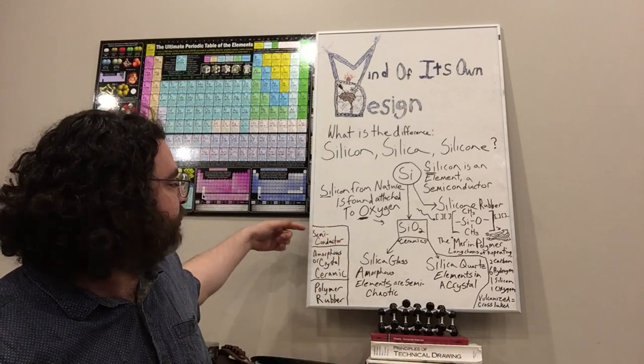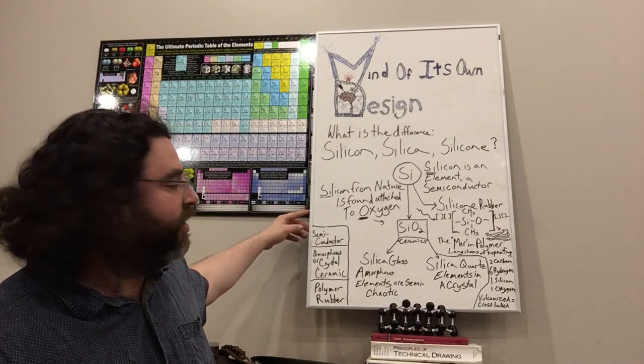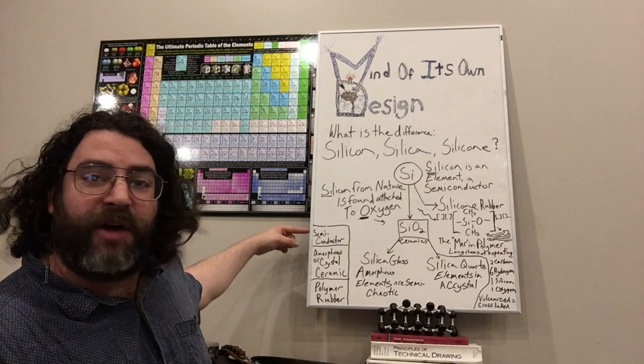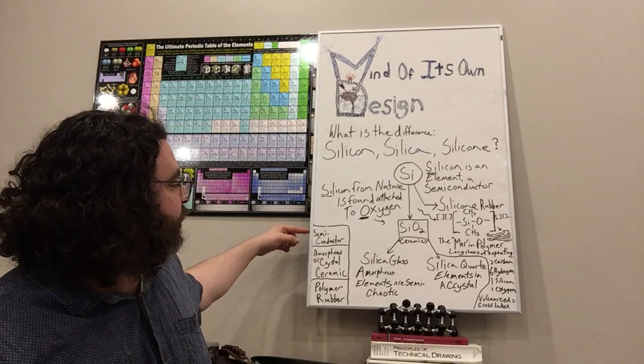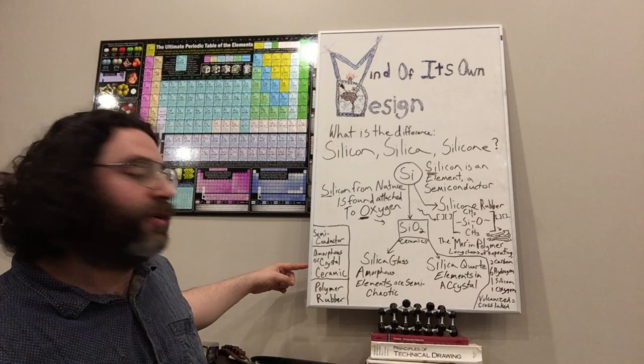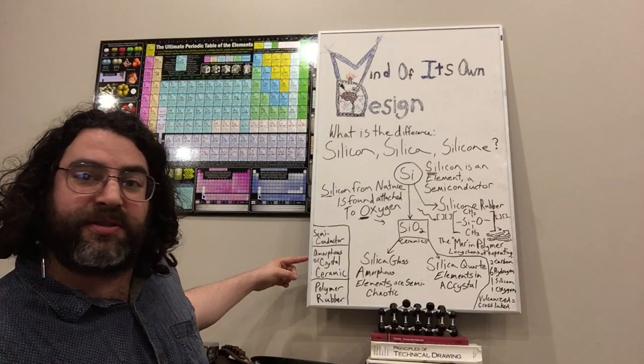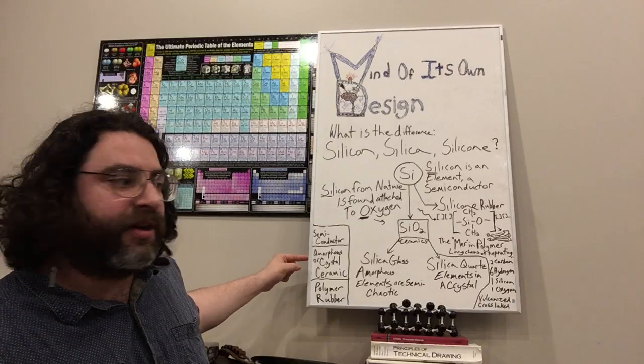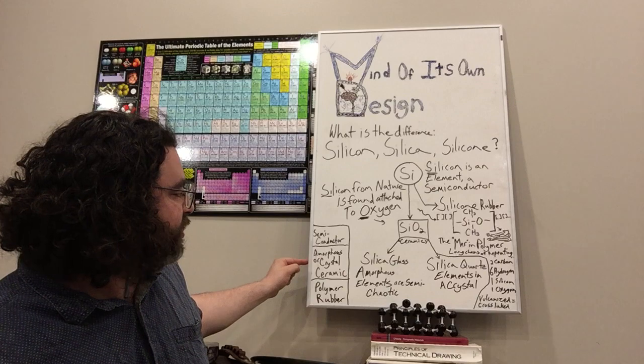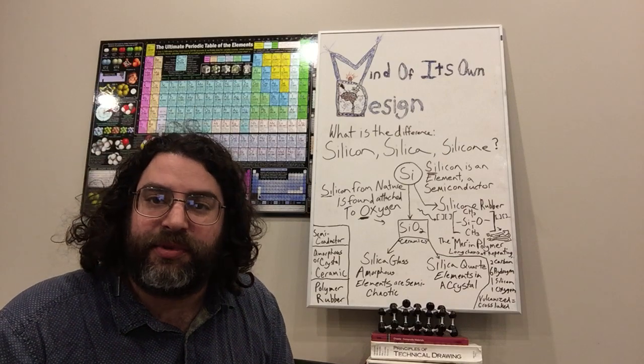In conclusion, the three common, or three or four really, common ways you might find silicon are as a purified semiconductor, often combined with germanium, or as a ceramic in either the form of a glass or a crystal. That's silica glass and silica quartz, SiO2, hard, high temperature resistant, and pretty strong, definitely in compression.